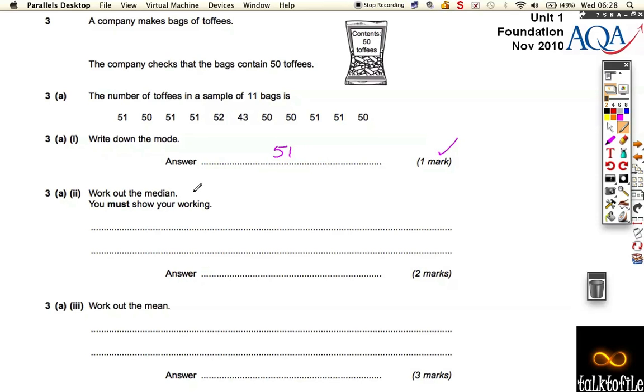Now we're going to work out the median. We've got to remember that median means the middle number, but only the middle number when we've put in order, when they're in order either from smallest to biggest or biggest to smallest. So let's rewrite it so we've got some working out. It says you must show your working, so you can't just count down the middle here.